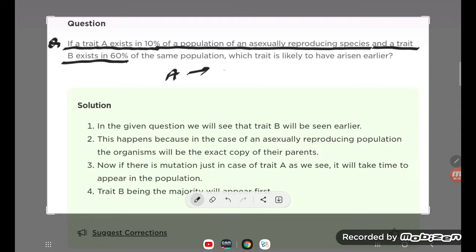Character A is 10% and character B is 60% of the same population. Which trait is likely to have arisen earlier?